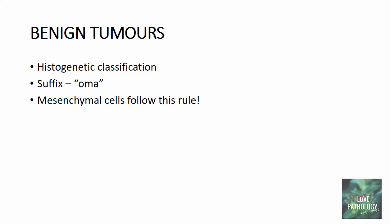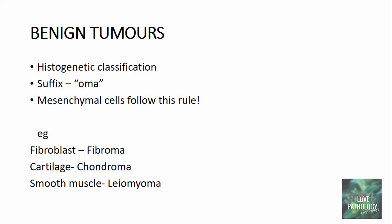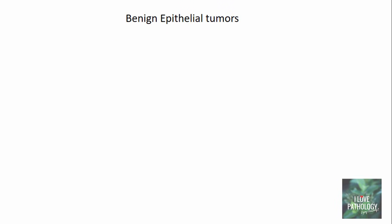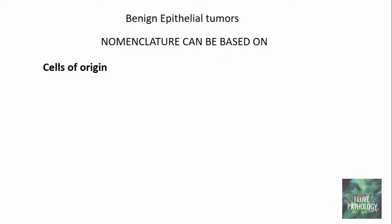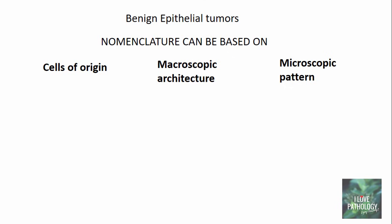Benign tumors are classified on a histogenetic basis. To designate a benign tumor, all you have to do is attach the suffix -oma to the cell of its origin. Mesenchymal tumors follow this rule most often. For example, if the tumor is derived from fibroblasts, the benign tumor is referred to as fibroma. If derived from cartilage, it is chondroma. And if derived from smooth muscle, it is called leiomyoma. Coming to benign epithelial tumors, the nomenclature is a bit complex.